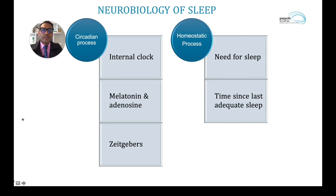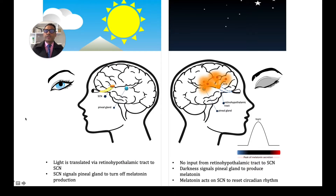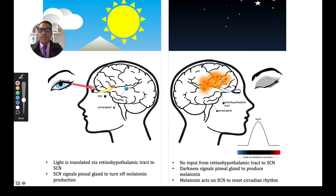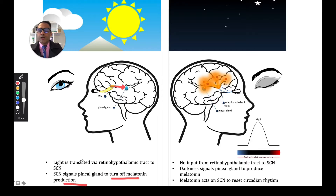So if you haven't slept well, it's likely that the homeostatic process will kick in, forcing you to get adequate sleep. Next, let's have a look at the circadian rhythm. The circadian rhythm is closely linked to light, and when light hits the retinal ganglion cells, it's translated via the retinal hypothalamic tract to the suprachiasmatic nucleus.